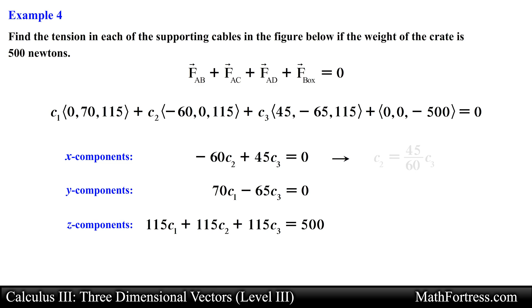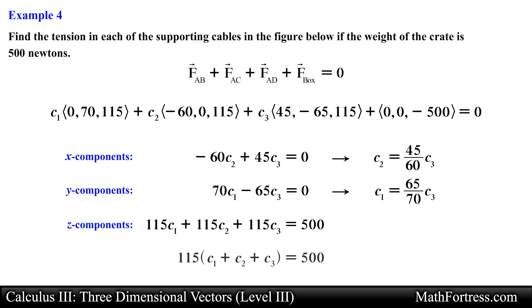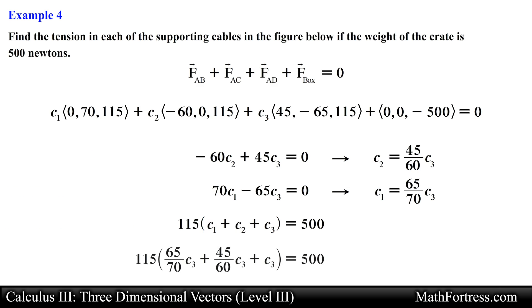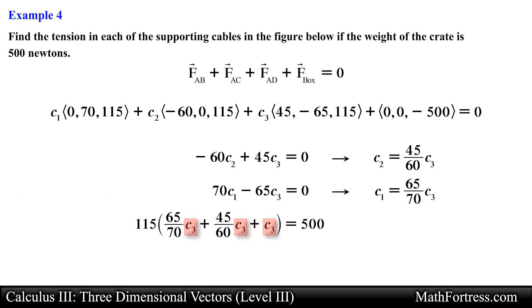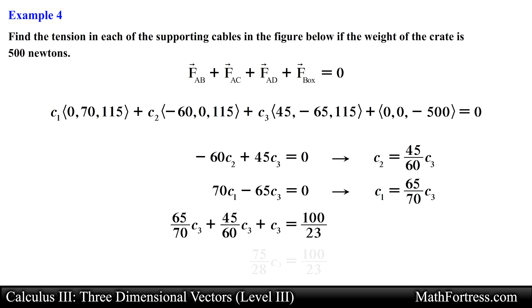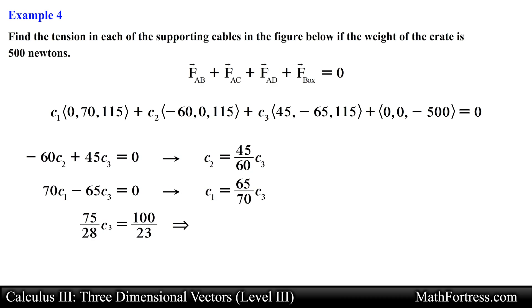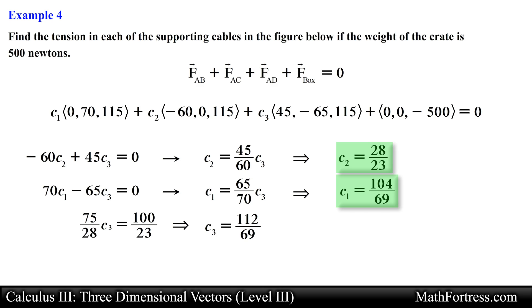Using the first equation we solve for C sub 2, and using the second equation we solve for C sub 1. This allows us to substitute these constants into the third equation, reducing it to an equation with a single variable. From here it is just a matter of collecting like terms and solving for C sub 3. Simplifying, we obtain the value for C sub 3, then solve for C sub 1 and C sub 2 obtaining their respective values.